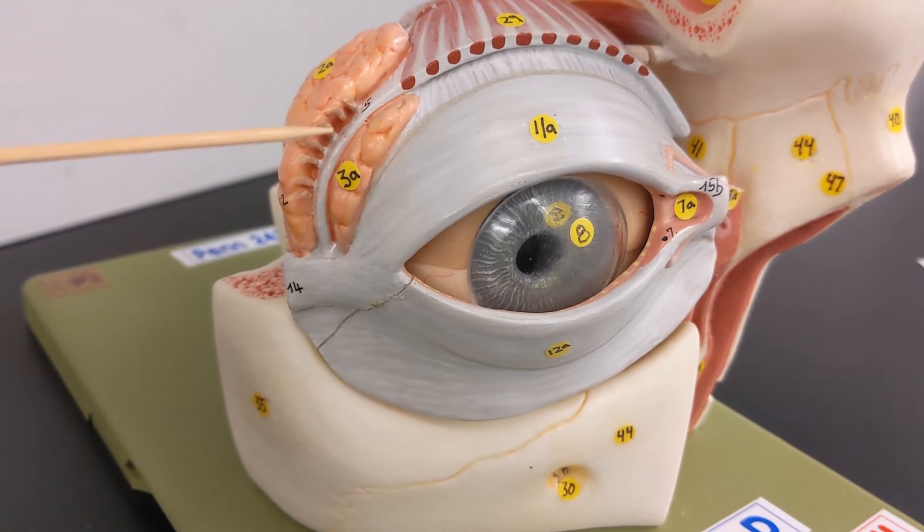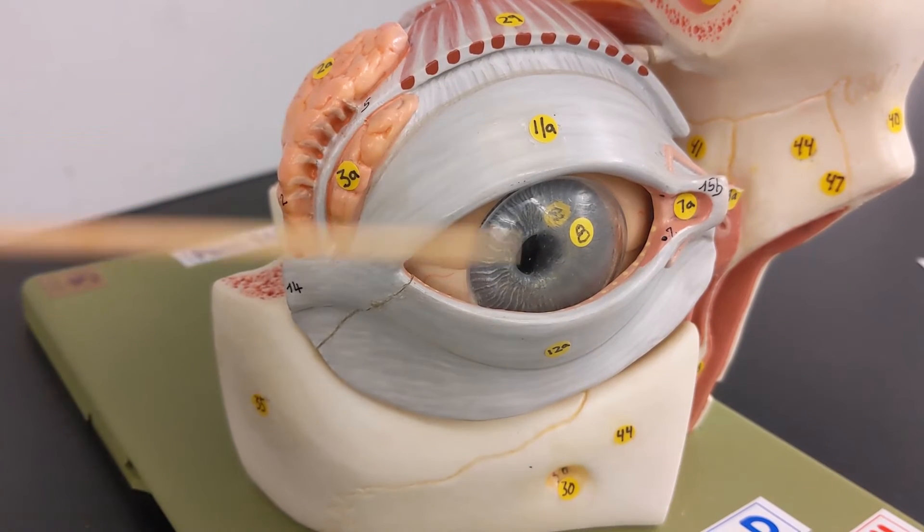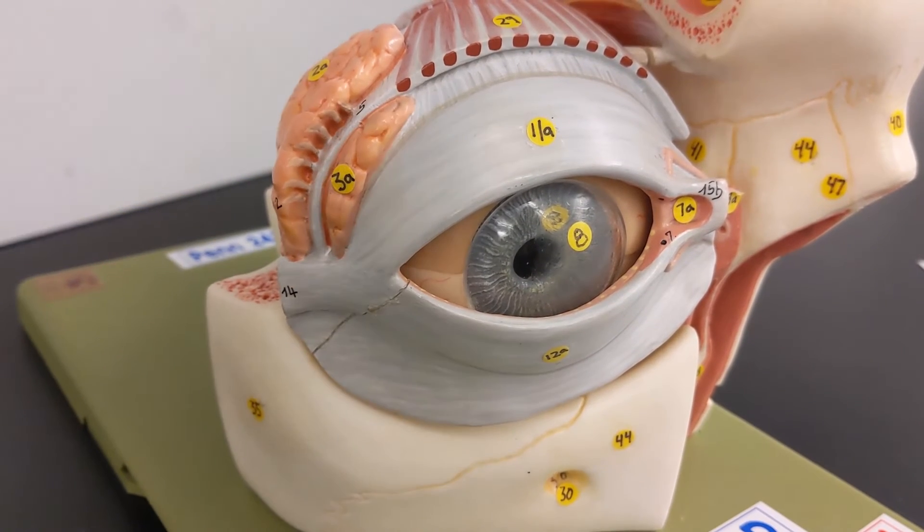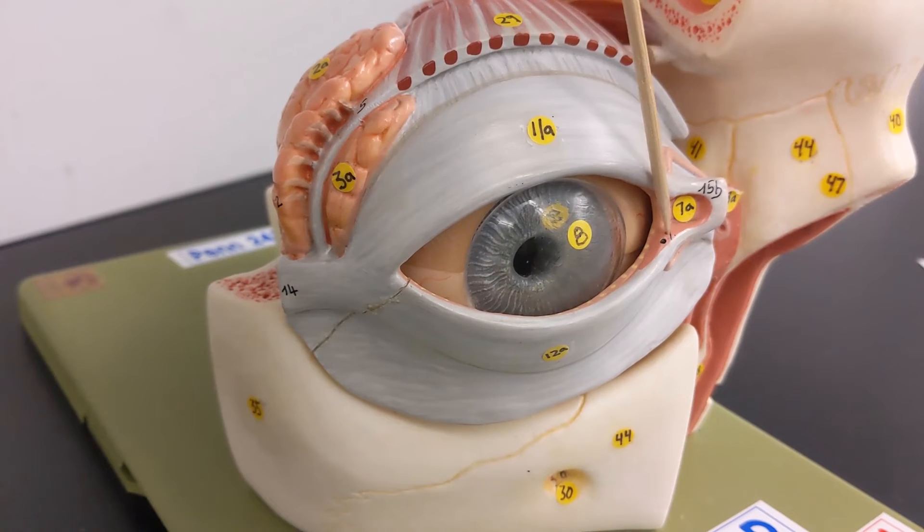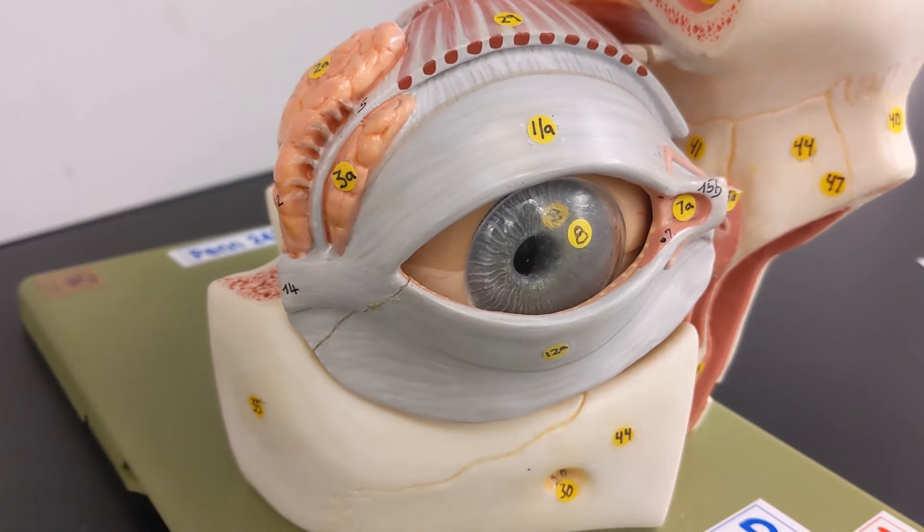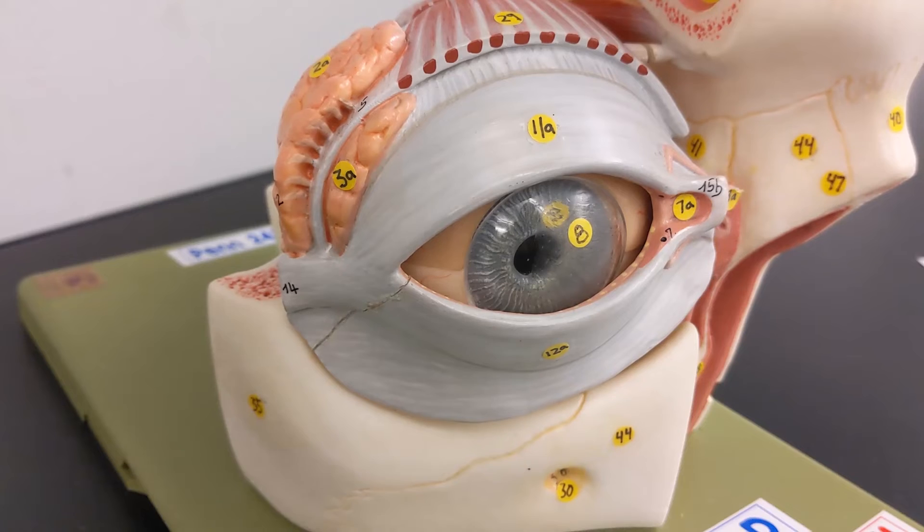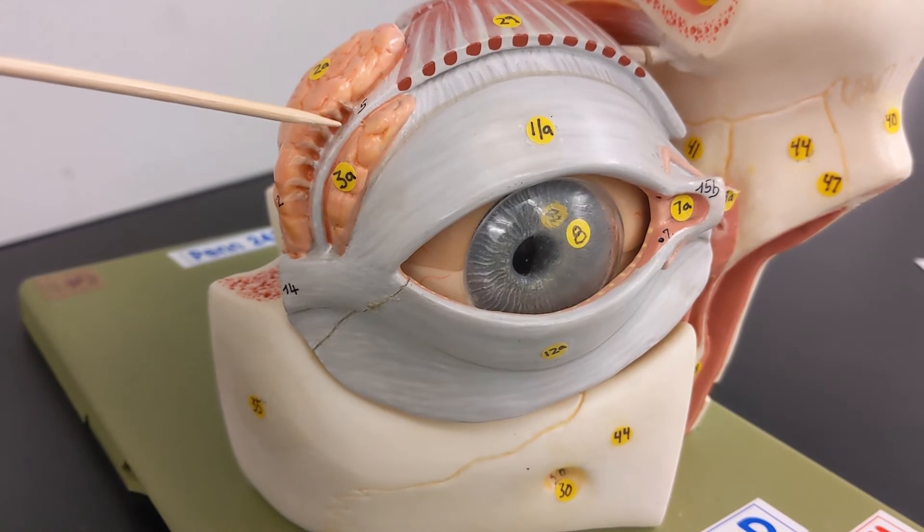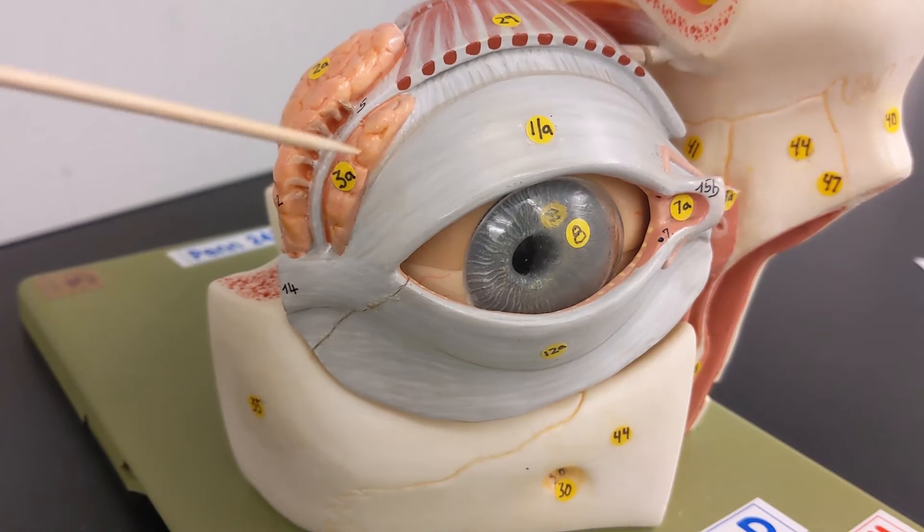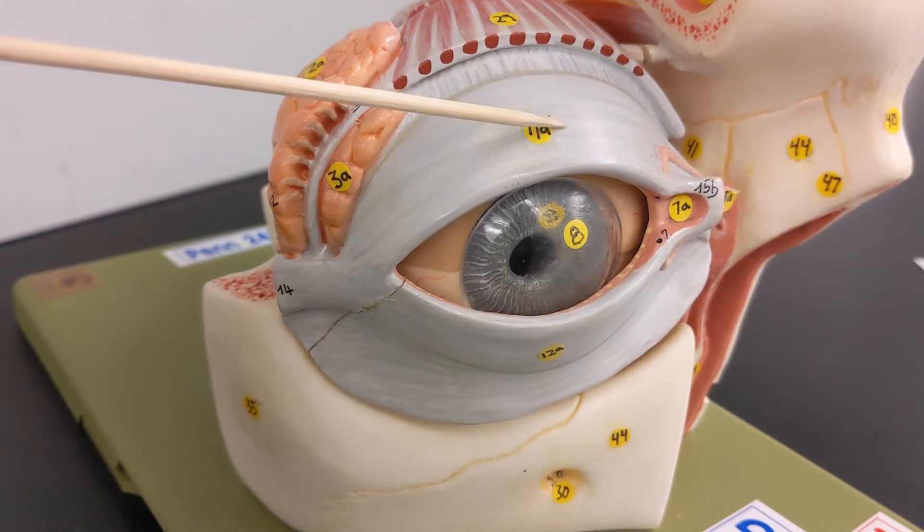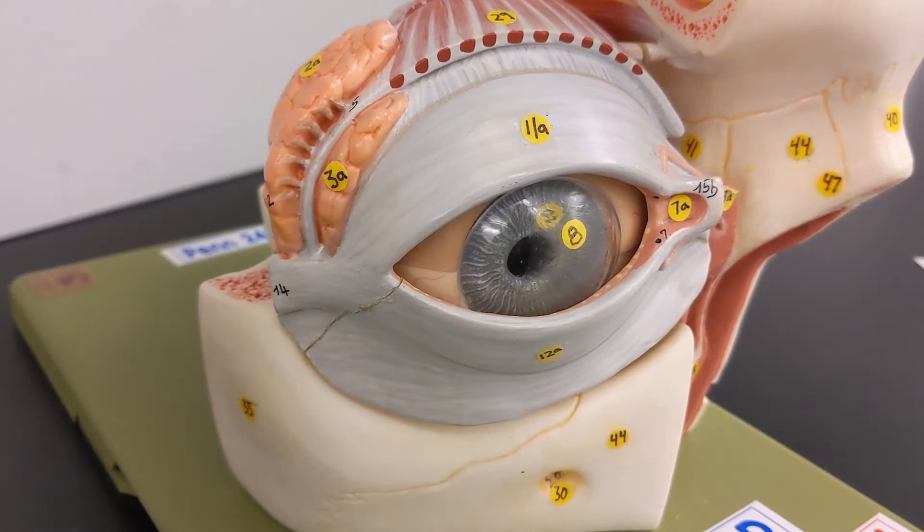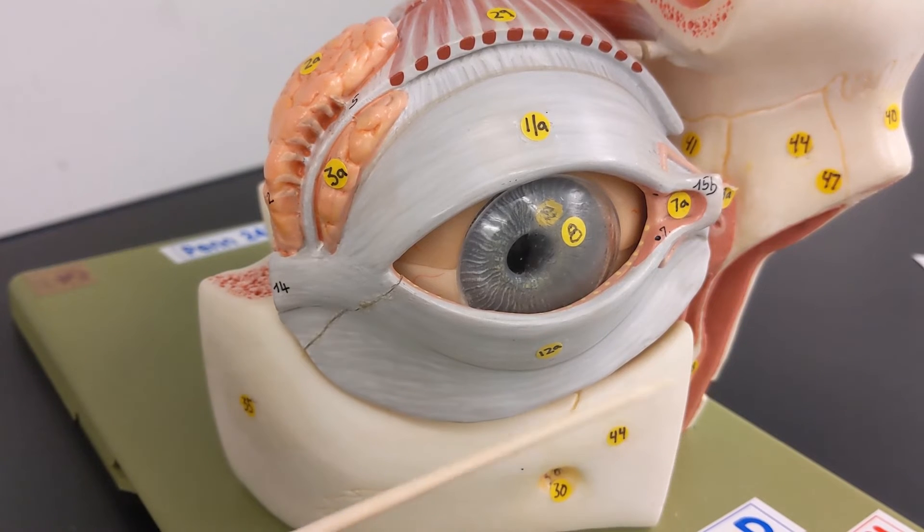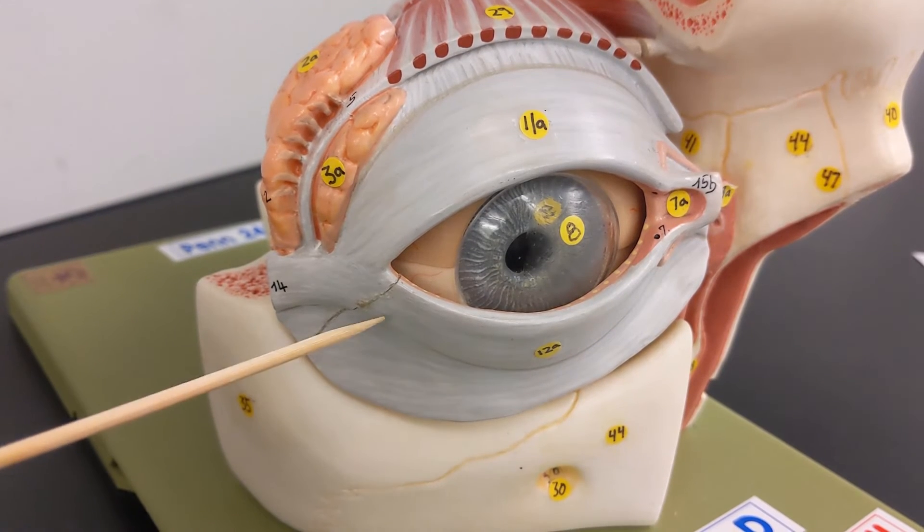So what are these, this, this? There's a little hole there as well. So this, both of these are lacrimal glands. This is the superior palpebrae, inferior palpebrae, just a fancy word for eyelid.